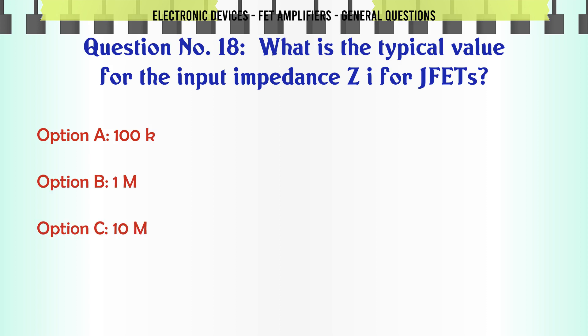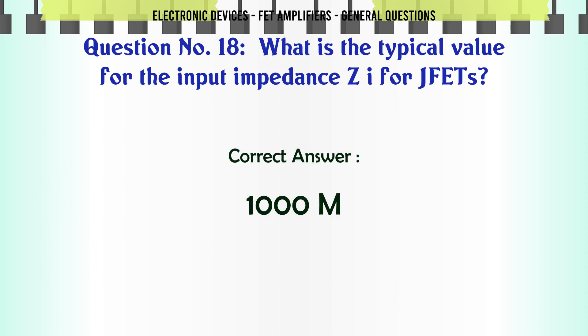What is the typical value for the input impedance ZI for JFETs? A. 100KΩ. B. 1MΩ. C. 10MΩ. D. 1000MΩ. The correct answer is 1,000MΩ.